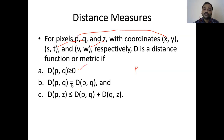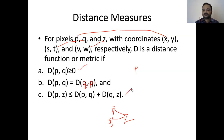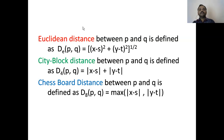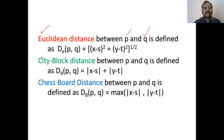The distance between p and q equals the distance between q and p. Lastly, for three pixels p, q, and z: the distance between p and z is less than or equal to the distance between p and q plus the distance between q and z — that is the third property. Given the coordinates of pixels p and q, we can have three different distance measuring formulas: Euclidean distance, city block distance, and chessboard distance.